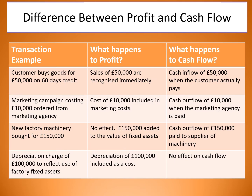So here's a few examples of the difference. A customer buys goods for £50,000 on 60-day credit. For profit, sales of £50,000 are recognised immediately — at the end of the year your profit will include that £50,000 in sales. But for cash flow, the cash inflow of £50,000 will only come in when you actually receive the money. So you may register it as profit, but you won't be able to spend any of that money because it's not there yet.